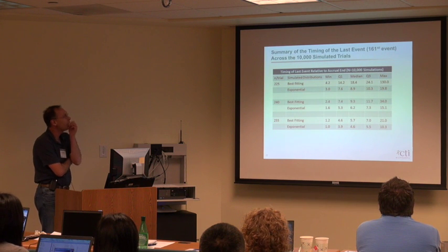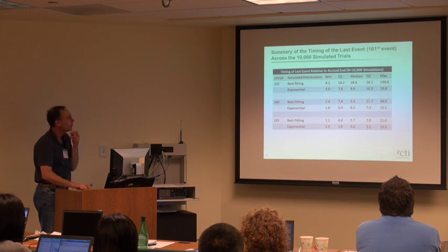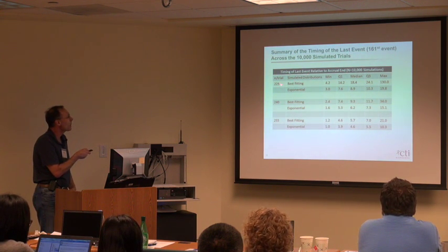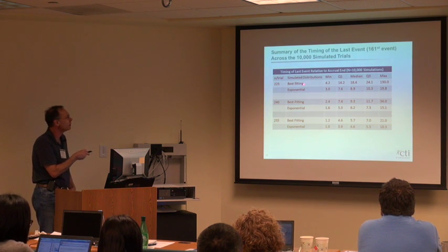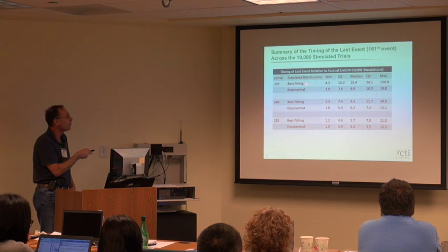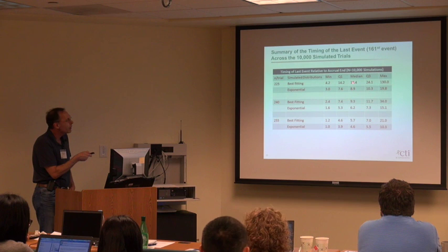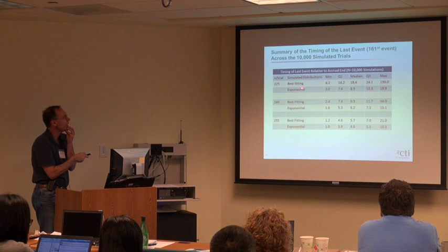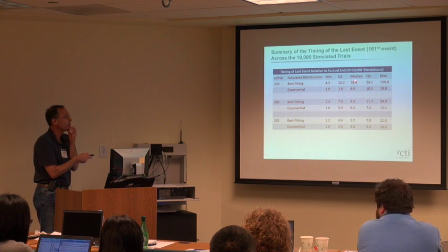Here's the summary of the simulations. Our design target was 161 events. With n equals 225 per arm, using the best-fitting gamma and Weibull distributions for events and dropouts respectively, compared to the best-fitting exponential: look at the difference in the timing of the last event relative to accrual end. The exponential predicted about nine months, whereas simulating from the best-fitting distributions gave roughly twice that.